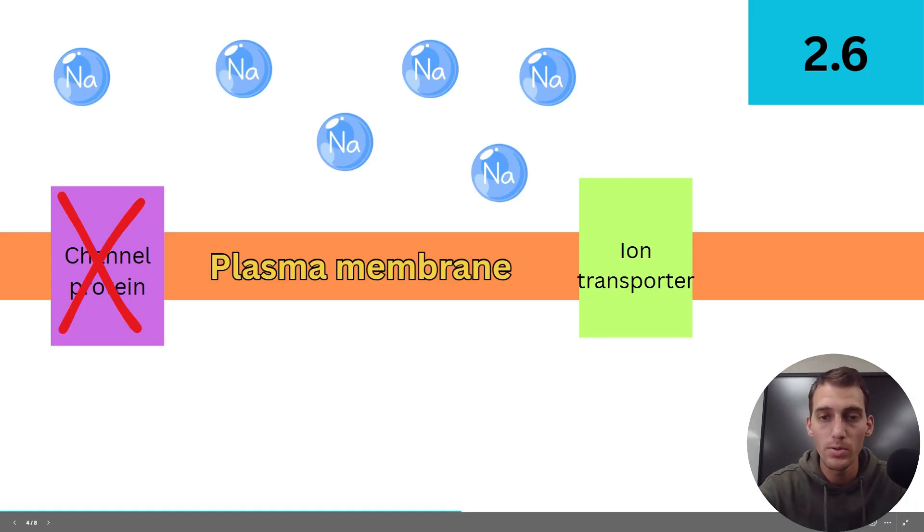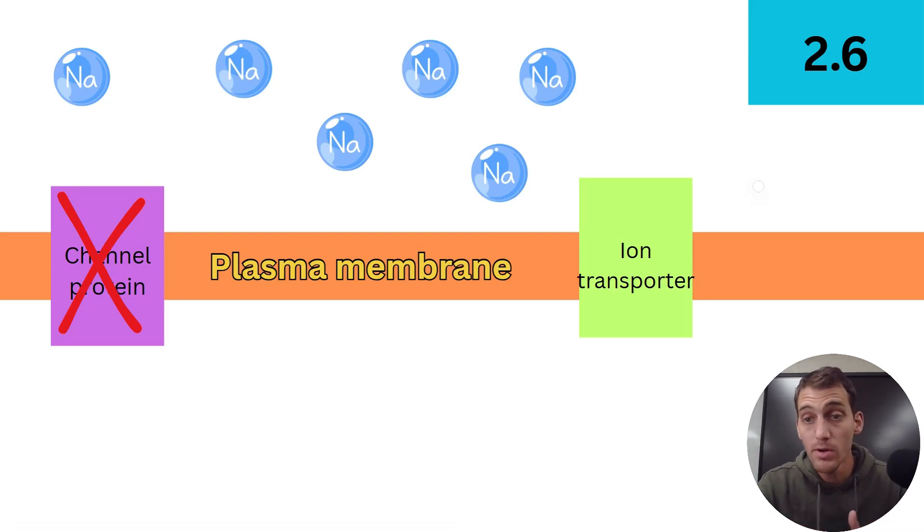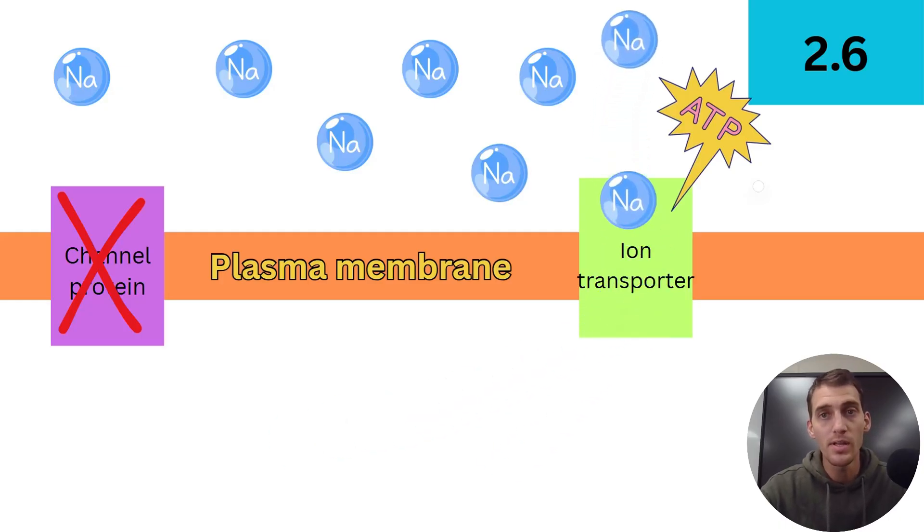So let's just say that that's closed. The sodium can't pass through, right? And if I am trying to get sodium out of the cell, I can use this ion transporter and some active transport. There's my ATP to push some sodiums out into the extracellular space or outside of the cell.